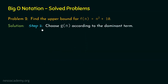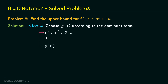Step number 2: choose g(n) according to the dominant term. The dominant term is n². We cannot take g(n) as n since n is less than n². We can take g(n) as n², n cubed, or 2 to the power n, but n² is nearest to the dominant term. After multiplying by a constant, there is a possibility it will eventually surpass n² + 10, so we take n² as g(n) — the least upper bound of f(n).